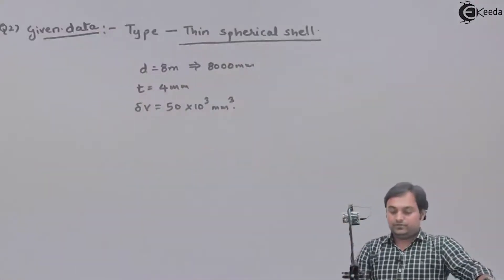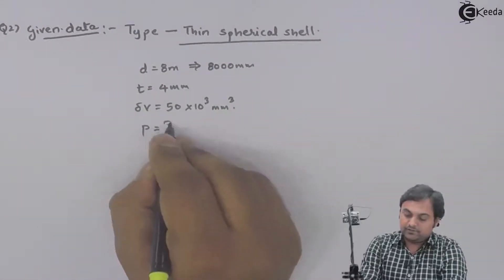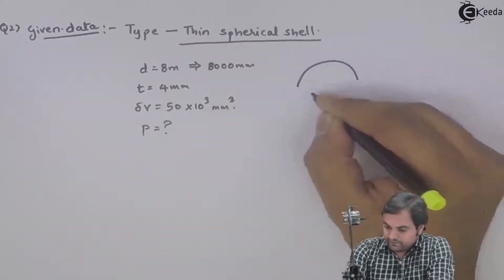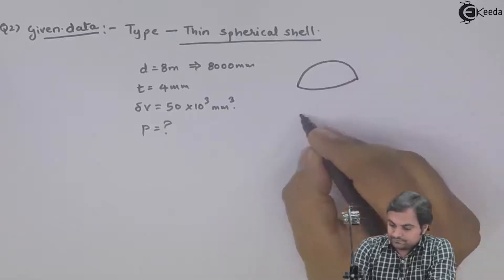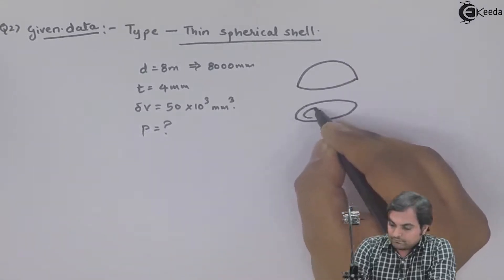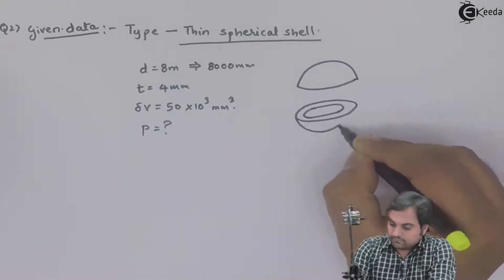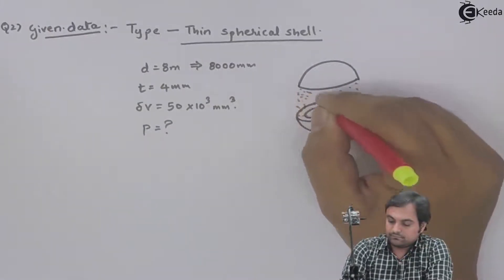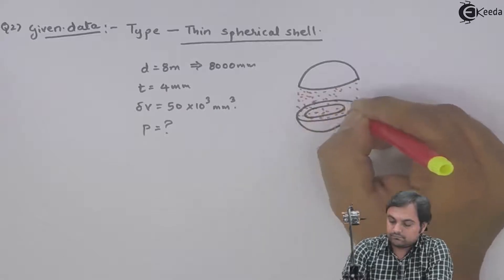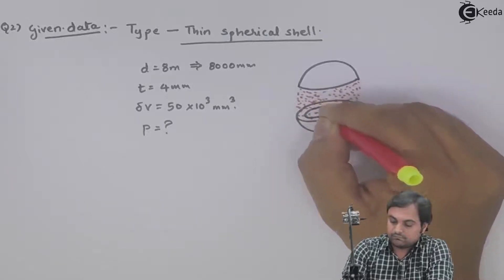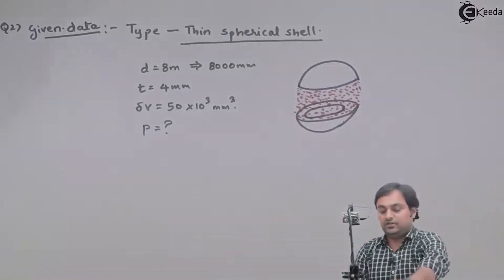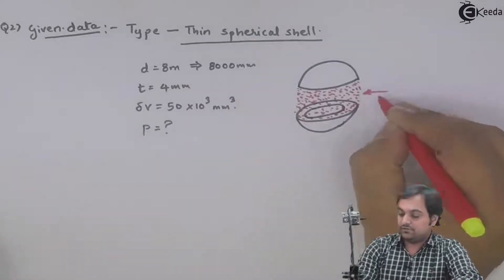The question asks us to determine the fluid pressure — we have to find out how much will be the fluid pressure. As usual, we draw the spherical shell breaking into two halves. Here we have a spherical shell filled with pressurized fluid.